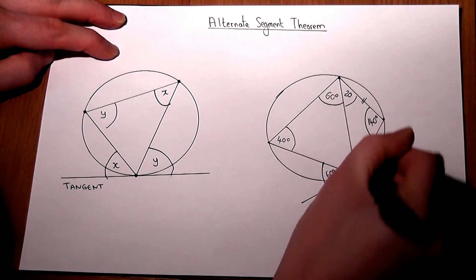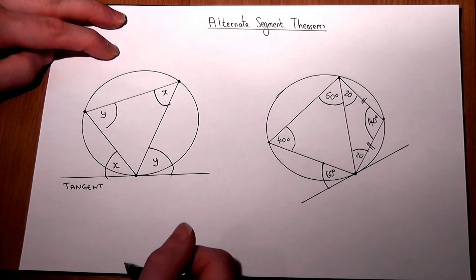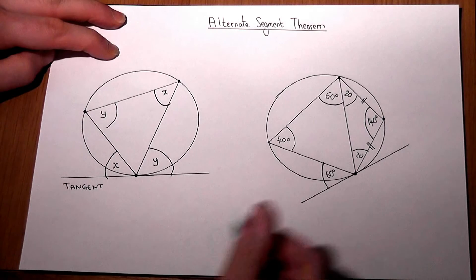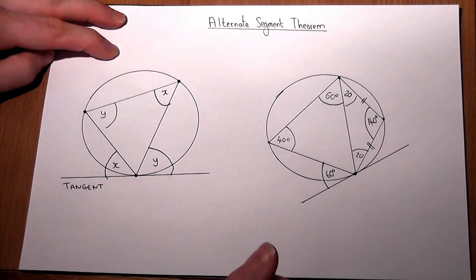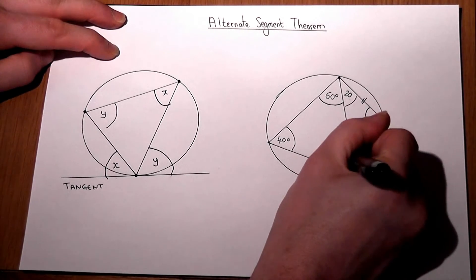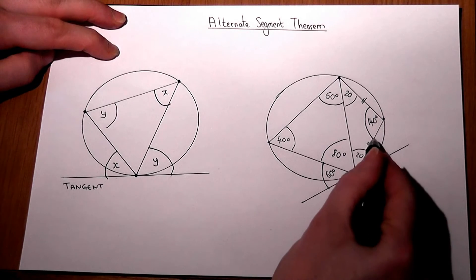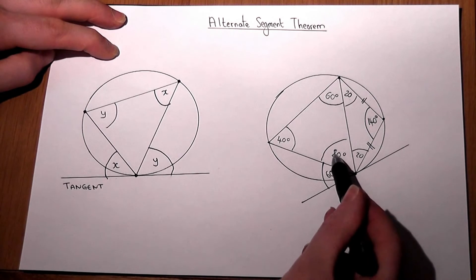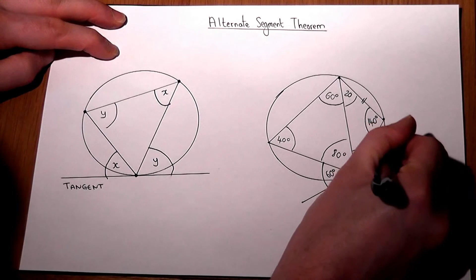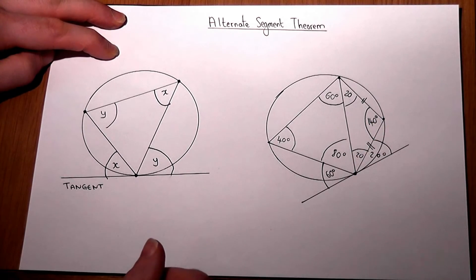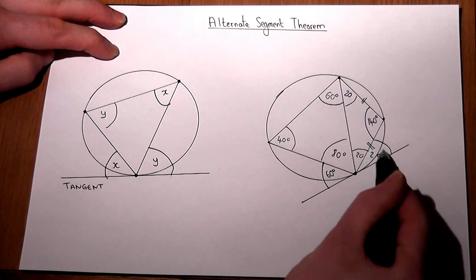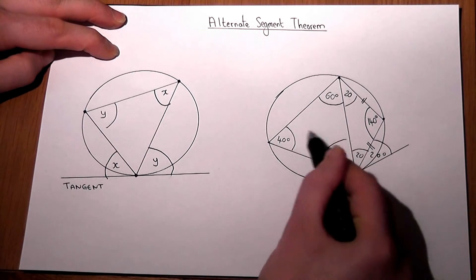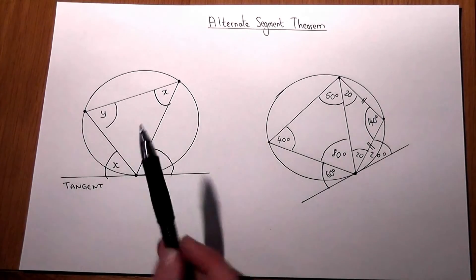Due to angles in a triangle, 40 plus 60 is 100, so this angle must be 80. And then this angle down here — the simplest way: 20 plus 80 is 100, plus 60 is 160, so that must also be 20. We can check our answer: that angle there is 40 in total, and the opposite angle is also 40 — so that all seems correct.